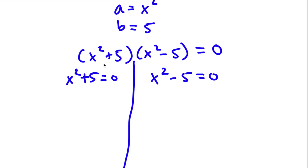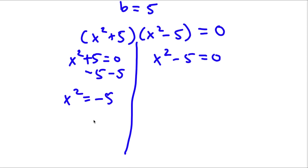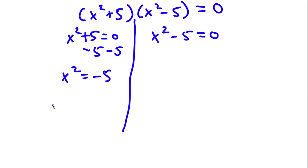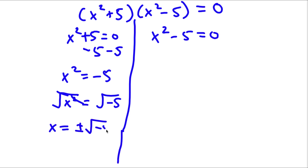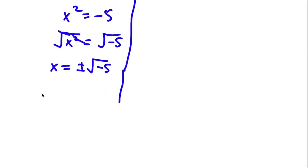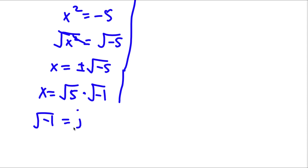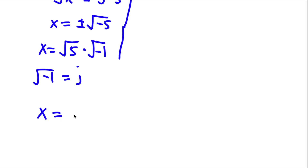For x squared plus 5 equals 0, I start by subtracting 5 on both sides, giving x squared equals negative 5. Taking the square root on both sides gives x equals plus or minus the square root of negative 5. The square root of negative 5 can be written as the square root of 5 times the square root of negative 1. Since the square root of negative 1 is the imaginary number i, this gives x equals plus or minus the square root of 5 times i.